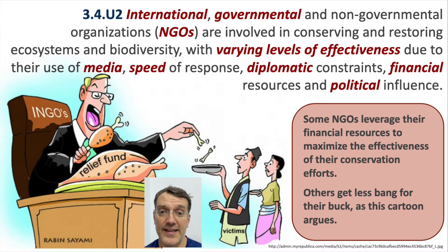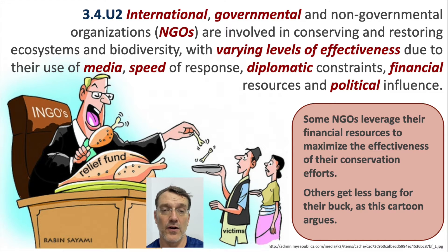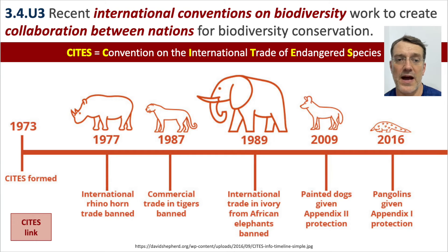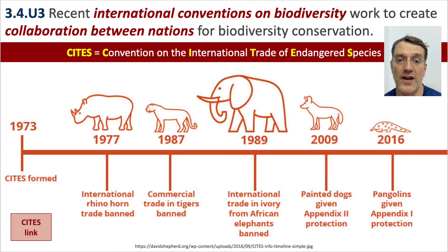Different organizations have different degrees of effectiveness. Large organizations such as the United Nations have a global spread and influence, but they're also quite bureaucratic, which restricts their effectiveness. Smaller grassroots organizations have a much smaller scale of operation, but tend to be locally effective and minimally effective on a larger scale. International conventions on biodiversity create collaboration among nations. One of the most famous is CITES — the Convention on the International Trade of Endangered Species — which came into effect in the 1970s and has been quite successful, particularly in combating the poaching of elephants and rhinos in East Africa.